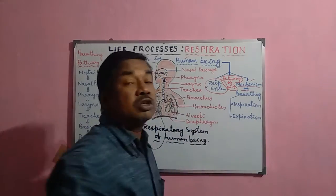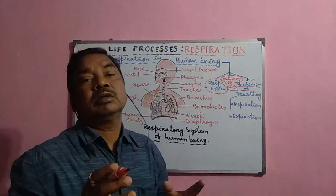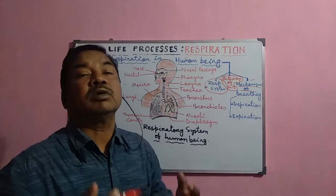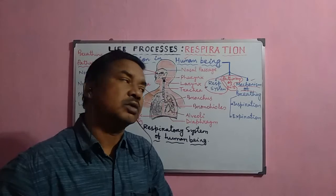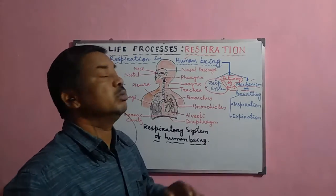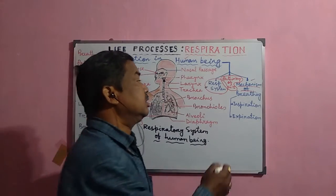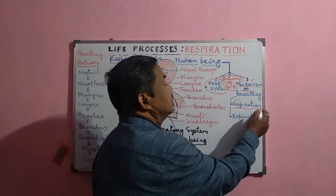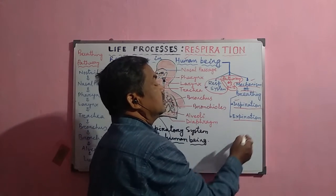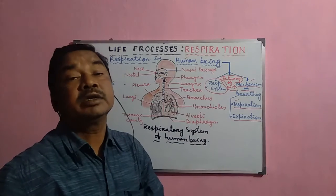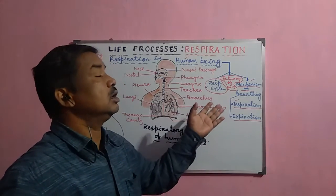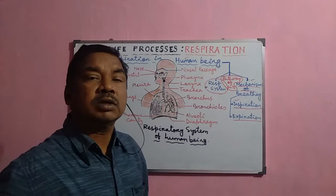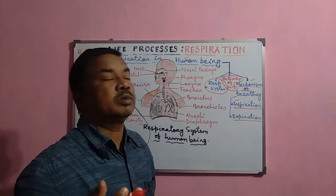How does breathing occur — how air enters into the lungs and how air comes out of the lungs. This process is called the mechanism of breathing, and it normally completes in two phases: inspiration and expiration, or inhalation and exhalation — that means taking in air into the lungs and giving out air from the lungs.